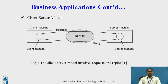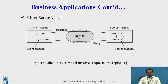The Client-Server Model works as follows: the client machine prepares data using the client process. After preparing the request data, it sends it in the form of a request to the server. The server processes it and, based on the client request, sends the reply to the client through the network. Both the client and server send data — requests and replies — through the network. This is a client-server model involving request and reply.